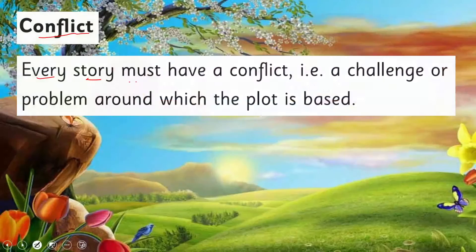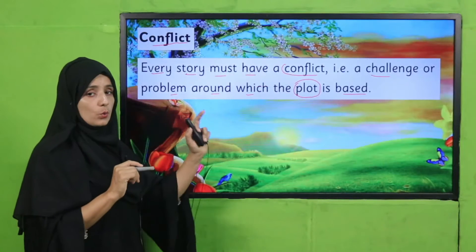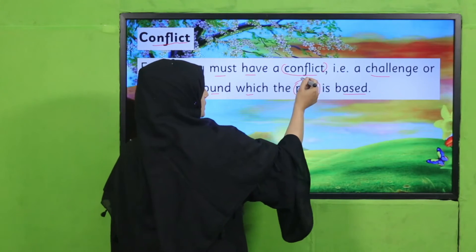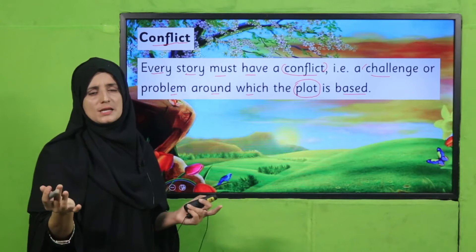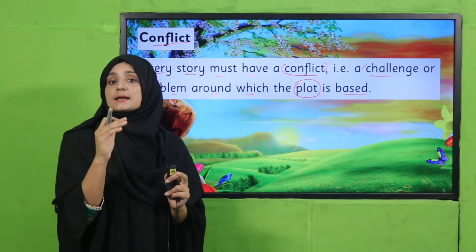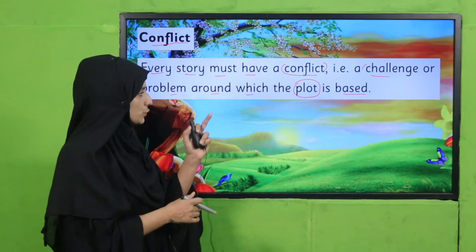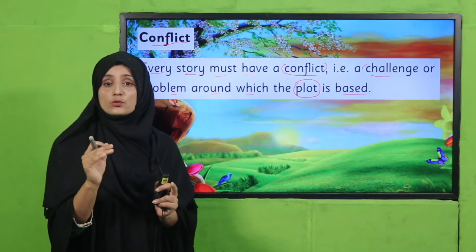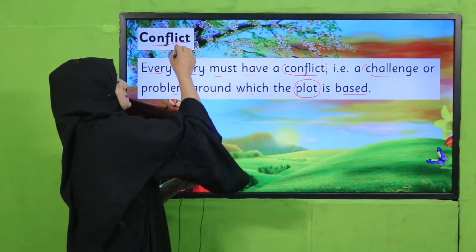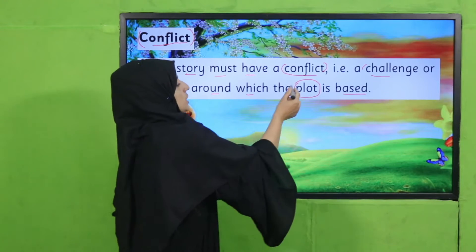Next is Conflict. Every story must have a conflict. What is a conflict? It is a challenge or a problem around which the plot is based. Conflict is that challenge or problem every story has. Whenever you are reading, or even watching a cartoon video, you can see that the main character has to face some challenges and problems — those are called conflict, and they are based on the plot.